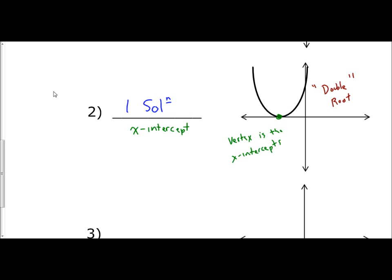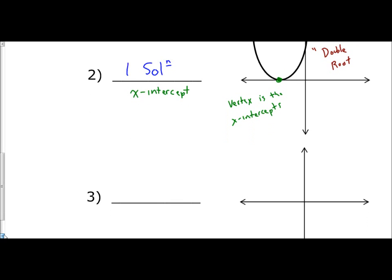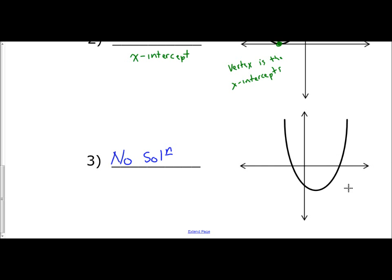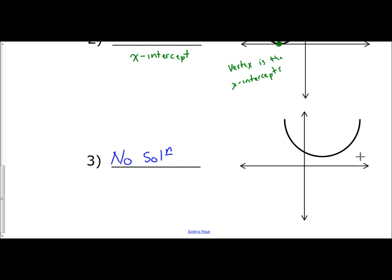The third case is if you have no solution — there is no x-intercept, no solution. If a parabola crosses the x-axis, we get two solutions. If the vertex rests on the x-axis, we get one. So how do we get no solutions? That's achieved by raising the graph higher so it does not cross the x-axis at all. A no-solution graph means there are no x-intercepts — the parabola does not cross the x-axis.